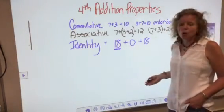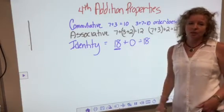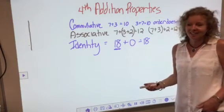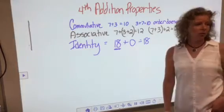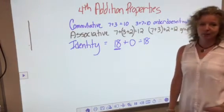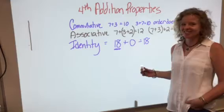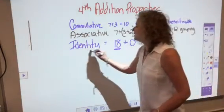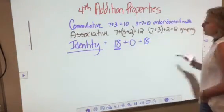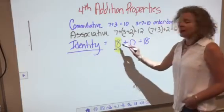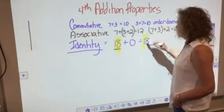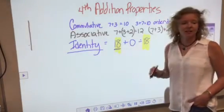4 plus 0 equals 4. 972 plus 0 equals 972. The identity property simply says a number keeps its identity - it does not change when 0 is added to it.